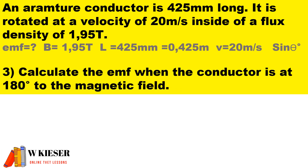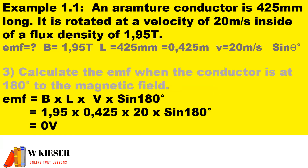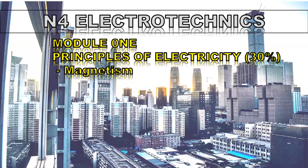Calculate the EMF when the conductor is at 180 degrees to the magnetic field. This is easy — no EMF is induced. But if you want to calculate it, sine 180 actually gives you zero, and anything multiplied by zero is zero. Thanks for watching this video on magnetism for N4 Electrotechniques.